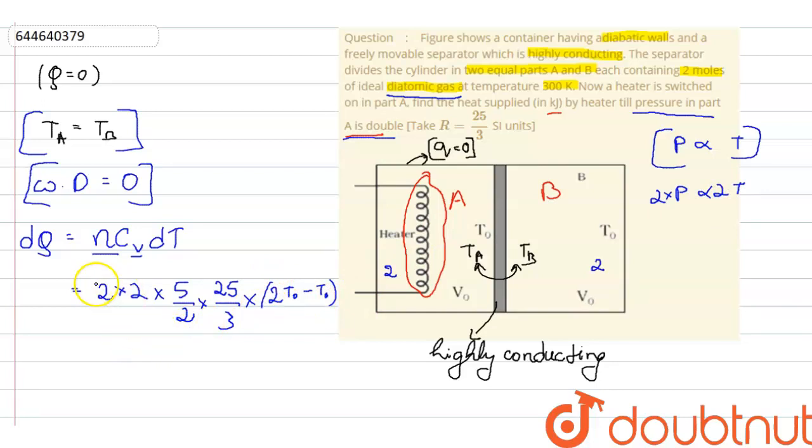So this can be written as this and this gets cancelled out. We get 250 upon 3 into 2T0 minus T0 which is T0 which has a value of 300 Kelvin. Now 300 Kelvin, this and this gets cancelled out and this can be written as 25 kilojoules. So our answer is 25 kilojoules.